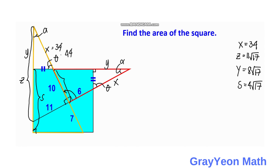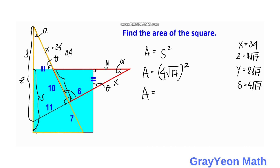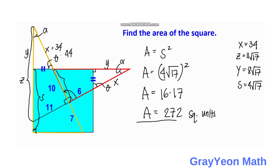For the final step, we are now ready to find the area of the square. Area = s². Since s = 4√17, we have Area = (4√17)² = 16 × 17 = 272 square units. That is our answer.